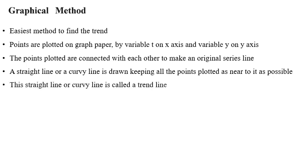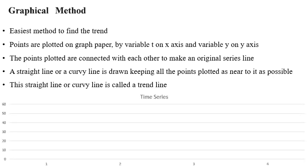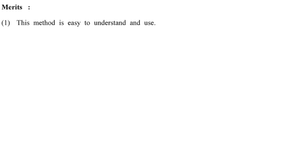This straight or curved line is called a trend line. For example, with t values 1, 2, 3, 4 and data 0, 10, 20, 30, 40, 50, 60, we plot the points on the graph. The dark blue line plotted according to the points is the original series line, and the dotted line on the graph is the trend line. This is how the graphical method works.